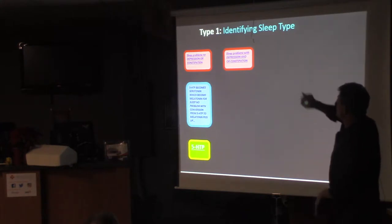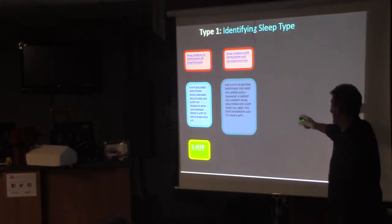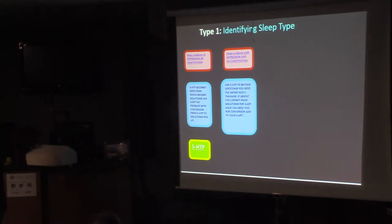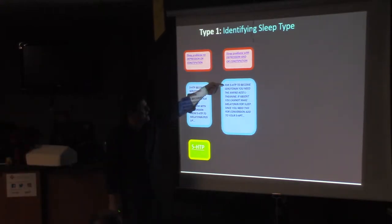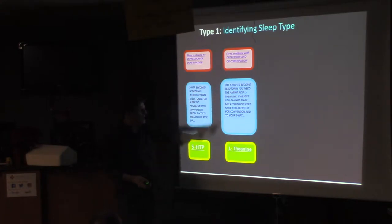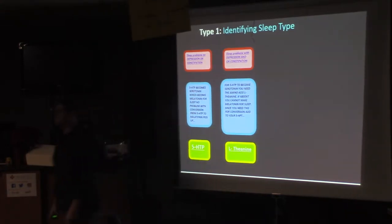Now, sleep problems with depression and constipation. What's happening? 5-HTP becomes serotonin. Serotonin is the happy hormone. The happy hormone also is the poop hormone that makes you go poop. That's why you get depression and constipation most of the time. The problem is you're not converting 5-HTP into serotonin, so you never get melatonin. And that amino acid, L-theanine, is an amino acid which converts 5-HTP into serotonin so it can become melatonin. So if you are that person, you need to get 5-HTP and L-theanine.